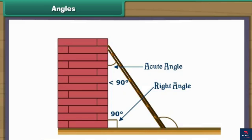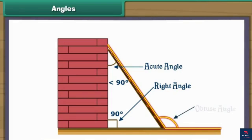Now let us look at the third angle that the ladder makes with the ground. We take the ground as the base. The ladder is not vertical — it is tilted out. Such an angle is called an obtuse angle, and its measure is more than 90 degrees.